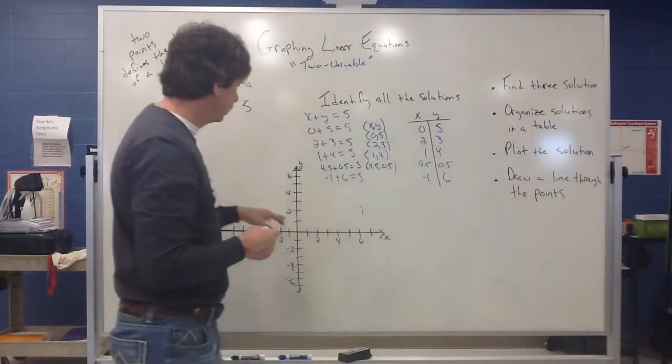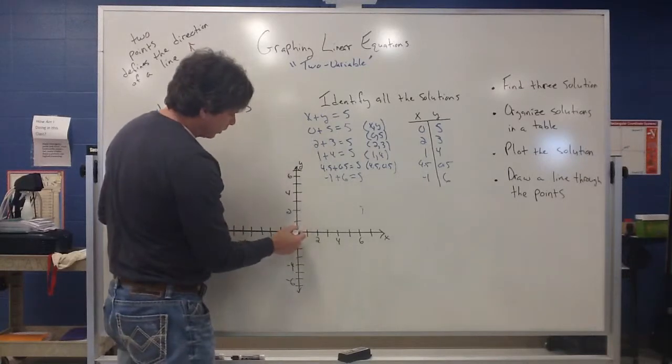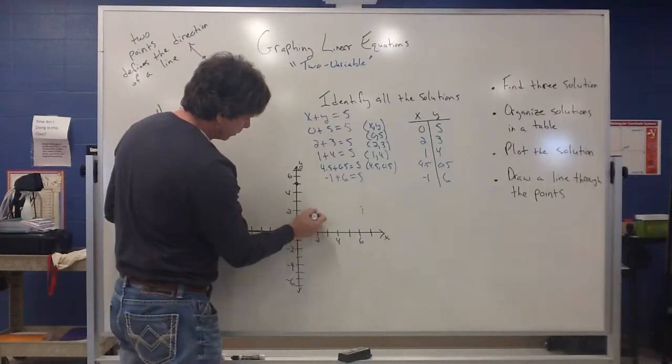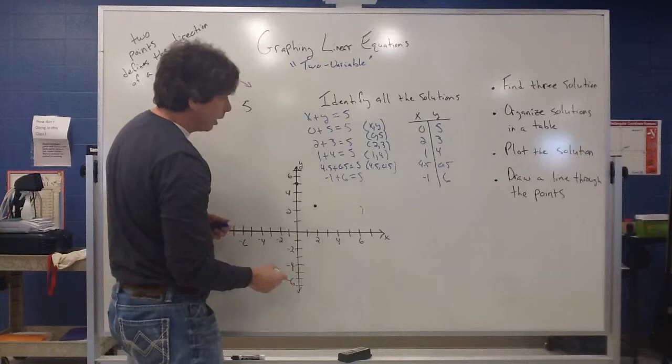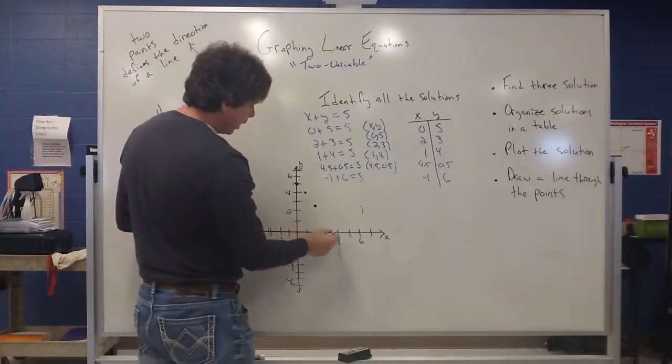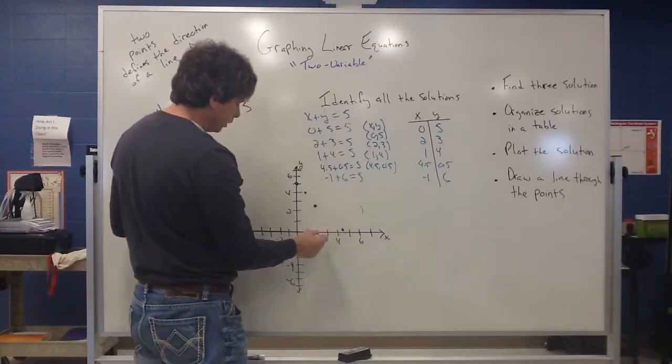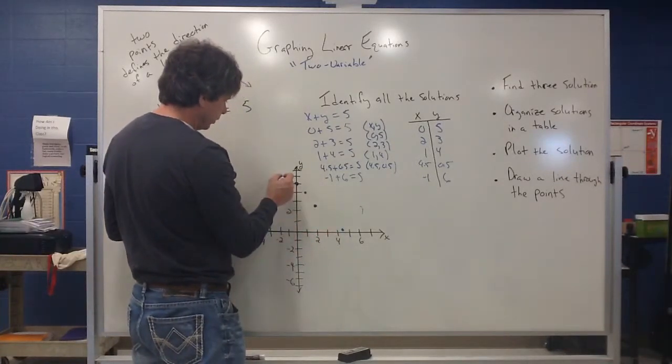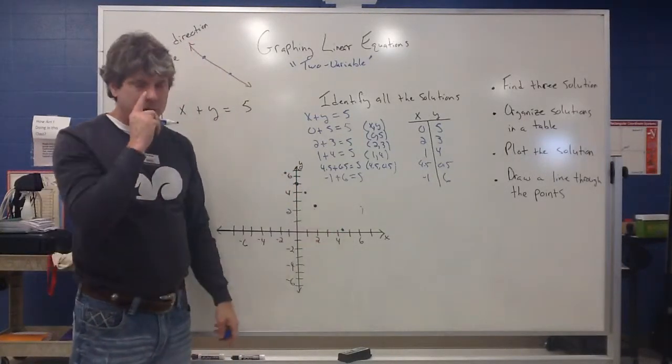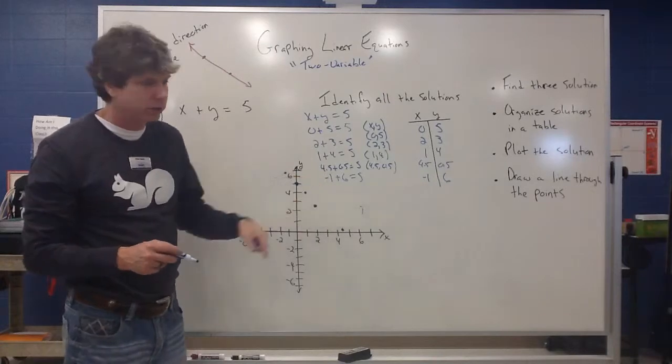So I want to put these ordered pairs into my graph. So I have a 0,5, so 0,5 would be here. I have a 2,3, 1,2, up 3. I have a 2,3. I have then a 1,4. 4.5, 0.5 would be about here. Negative one, six would be up here. What you kind of see, and this is kind of rough because I kind of sketched this, but you kind of see that these points do kind of follow a trend. They kind of go in a downward motion or even a downward linear motion.